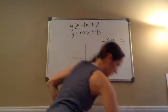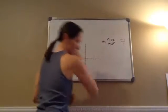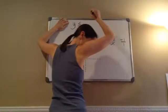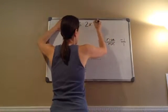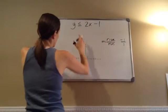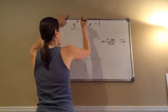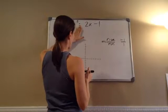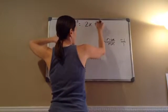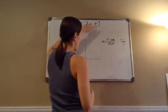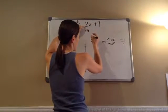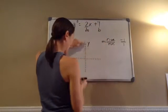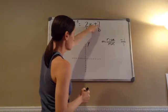Let's do 115.2. Here's what it says: y is less than or equal to 2x minus 1. Again, I'm going to pretend like this says equals, but it's really less than or equal to. Remember, y equals mx plus b. My m is 2, so I get 2 over 1, and my b is negative 1. So I go to my y-axis and plot negative 1.